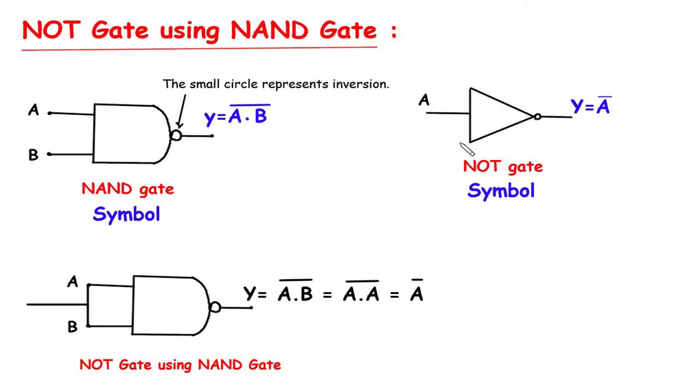This is the symbol for NOT gate. It has one input and one output. The output Y is given by Y equals A bar.